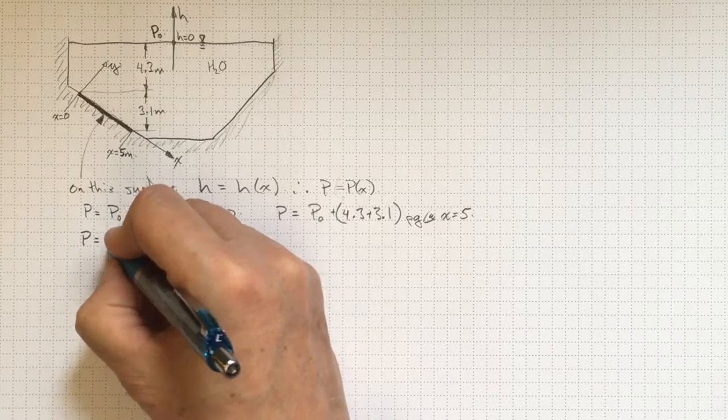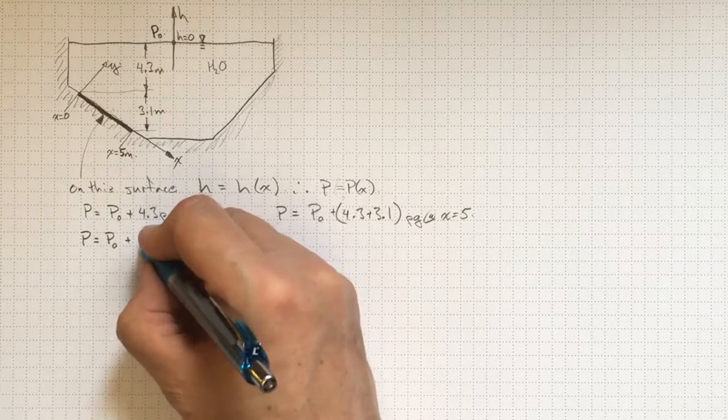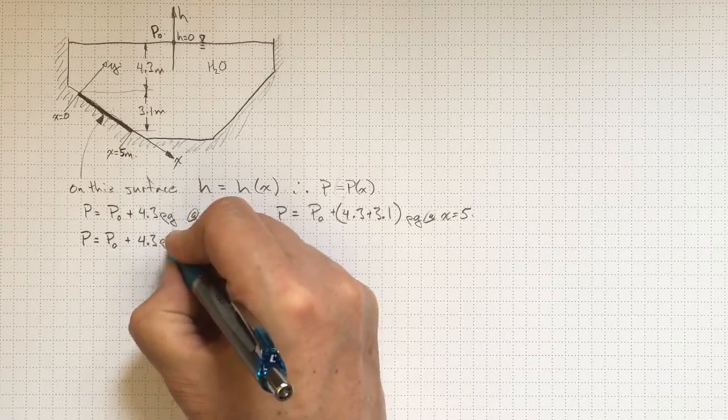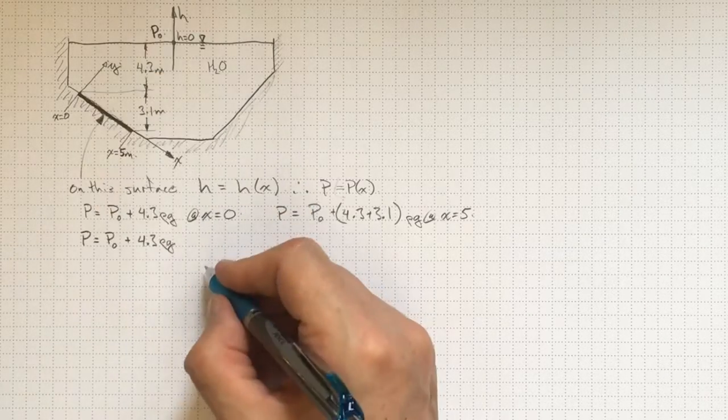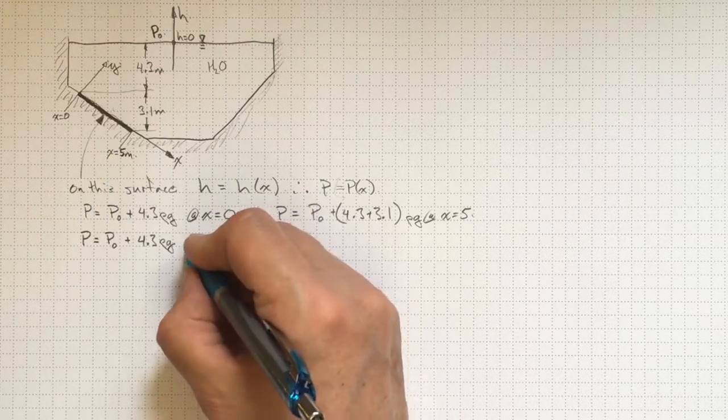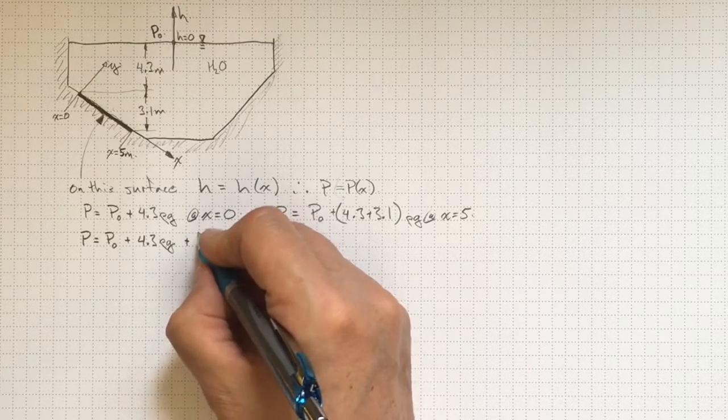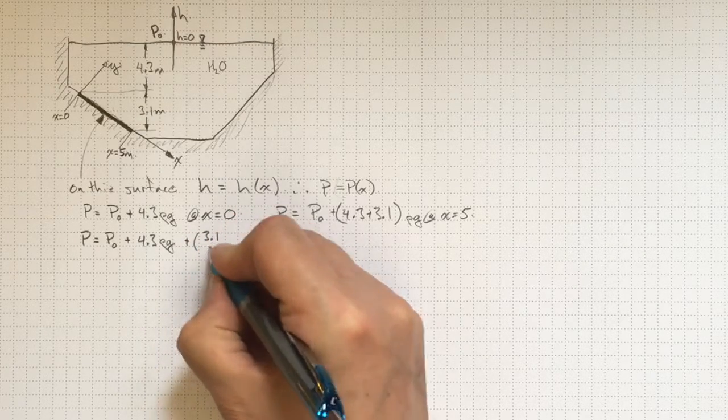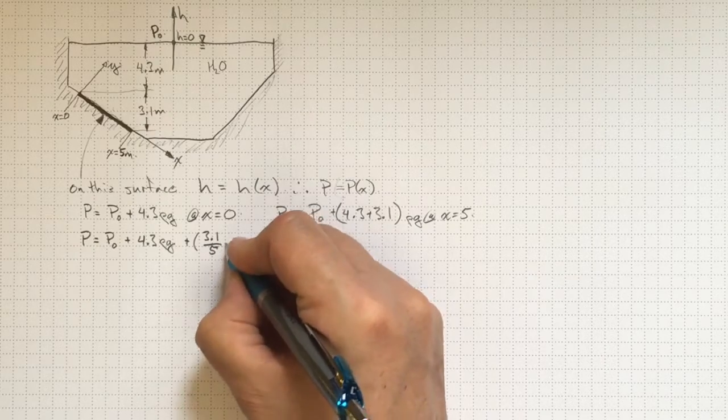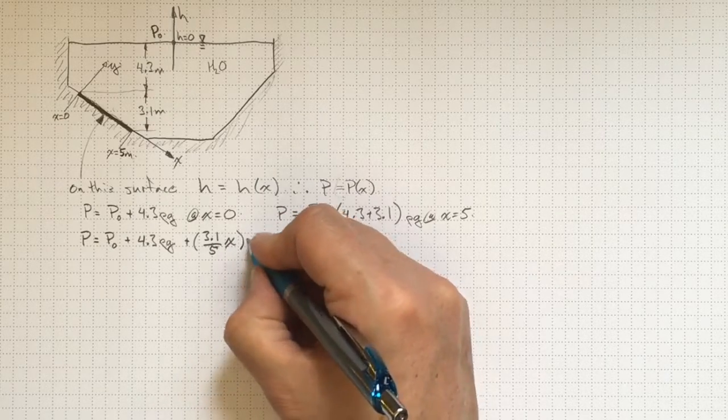It's still going to be p-naught. It's definitely going to be plus 4.3 rho g just to get us down to x equals zero.